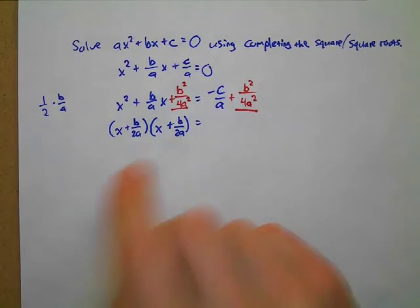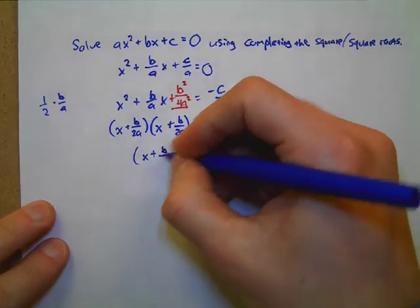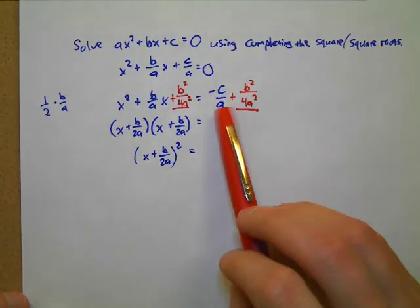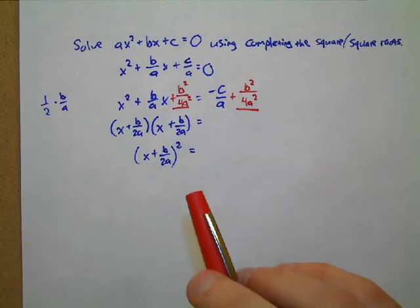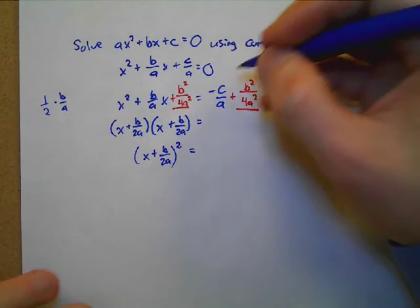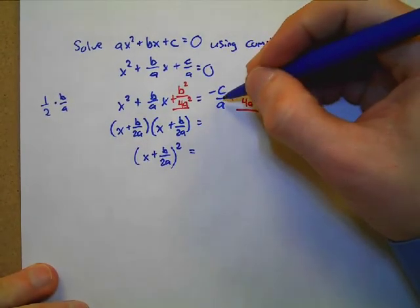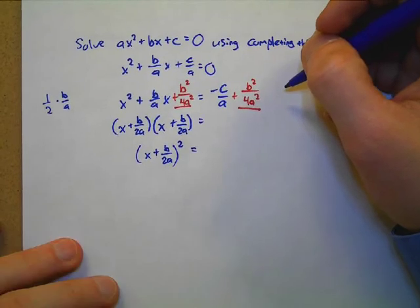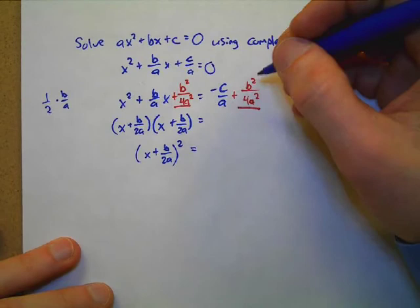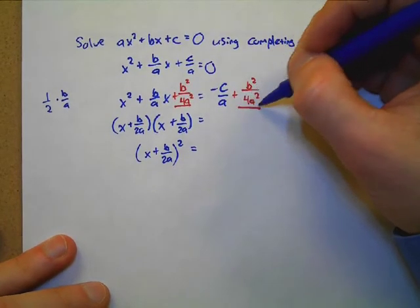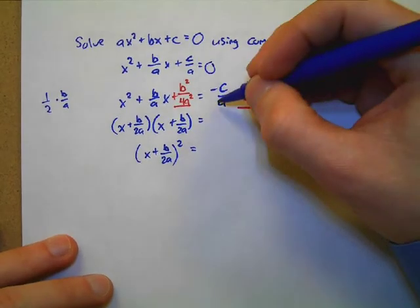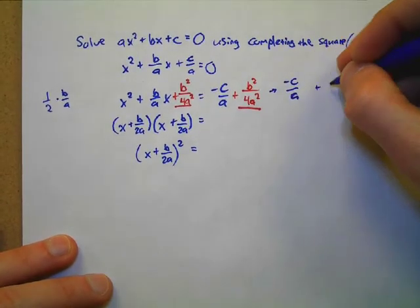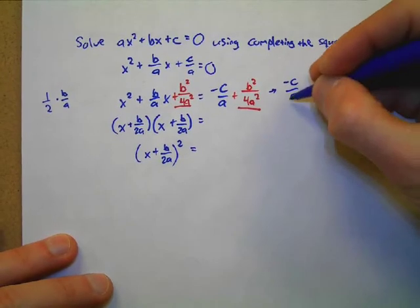The left-hand side is a perfect square now. This right-hand side is messy. Can we combine these two fractions together the way they're currently written? No, we can't. However, what can I do to this fraction to get a common denominator? I need to combine these two fractions. So let's look at this fraction's denominator and this fraction's denominator — to combine fractions we need a common denominator. This denominator is missing a four, so we have negative c over a and I need a four in the denominator, so I'll multiply by four over four.